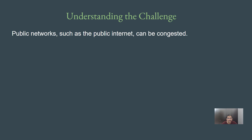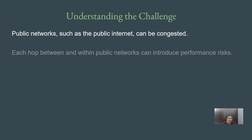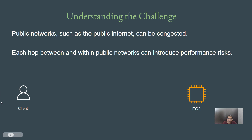Nowadays public networks such as the internet can be congested. Almost everyone uses the internet for day to day activities, so network congestion is one of the common patterns that you will see. Generally, each hop between and within the public network can include some amount of performance risk. Let's understand this with a simple diagram where you have a client on the left, an EC2 instance on the right, and the client wants to communicate to the EC2 instance. The client can be in a different country and the EC2 instance can be in a different country altogether, and the traffic flows through the internet.